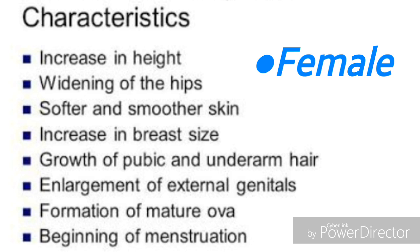Secondary sexual characteristics in females are: increase in height, widening of the hips, softer and smoother skin, increase in breast size, growth of pubic and underarm hair, enlargement of external genitals, formation of mature ova, and beginning of menstruation or menstrual cycle.